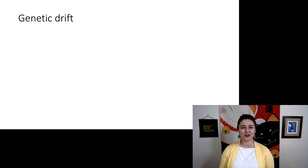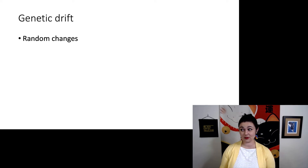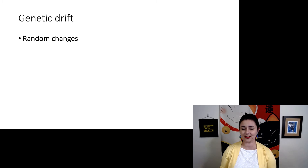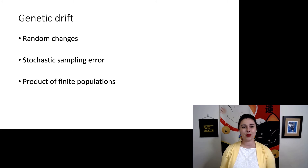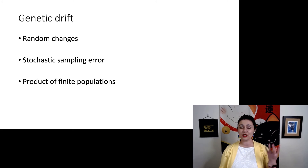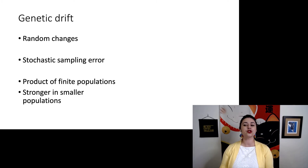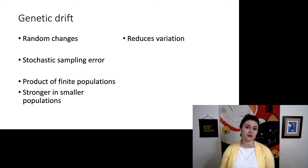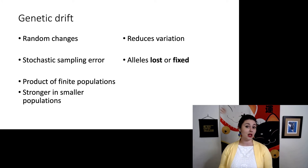Let's talk about our next force of evolution: genetic drift. This is the least understood one, really because it's random, and randomness isn't particularly well understood. Technically, it is stochastic sampling error, and it is a product of populations being finite, not infinite. In a small population, just by chance, the next generation is going to be a little bit different, and this effect is much stronger in smaller populations. Genetic drift reduces variation because alleles can either be lost from a population or fixed as the only allele present.